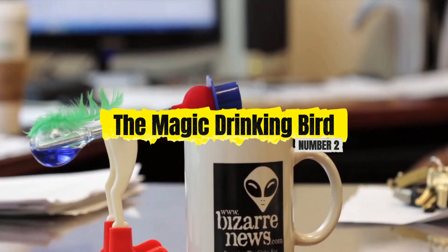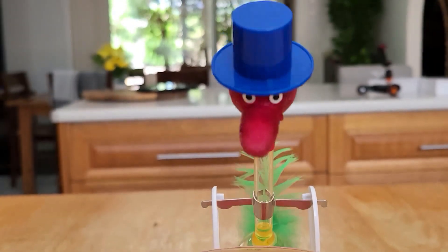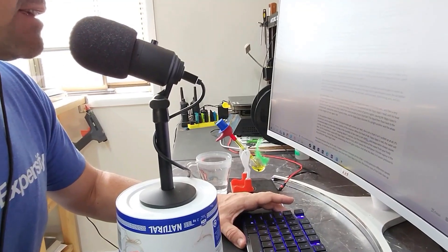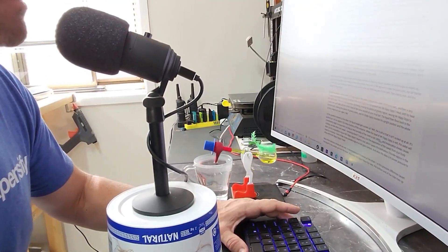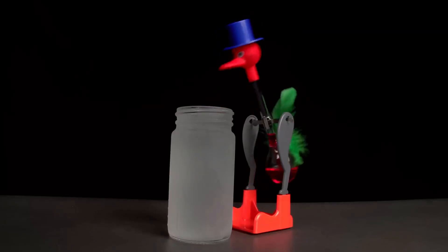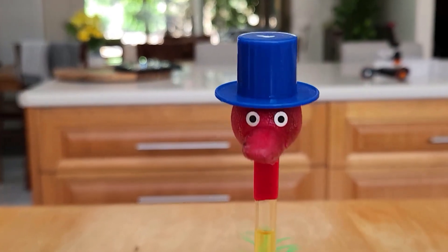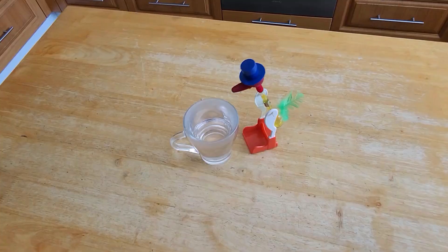Number 2. The Magic Drinking Bird. This quirky bird seems to have an unquenchable thirst, endlessly dipping its beak into a glass of water, but it's not alive. It's a tiny heat engine. The bird's body contains a volatile liquid that evaporates easily, like dichloromethane. When the felt on its head is wet, the water evaporates, cooling the gas inside its head.